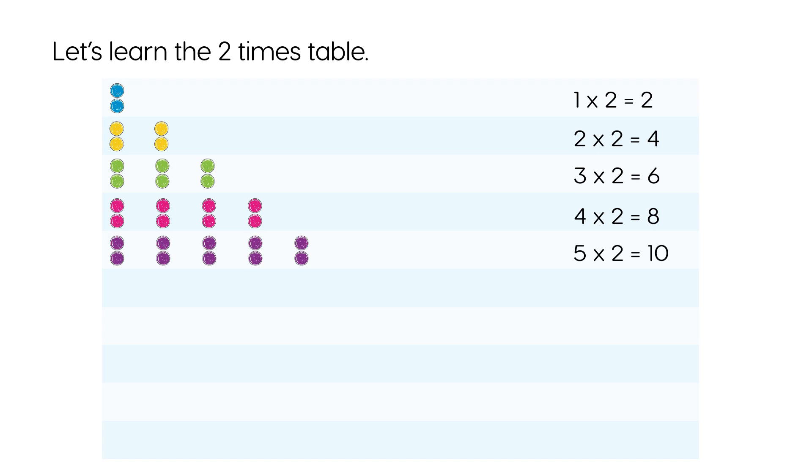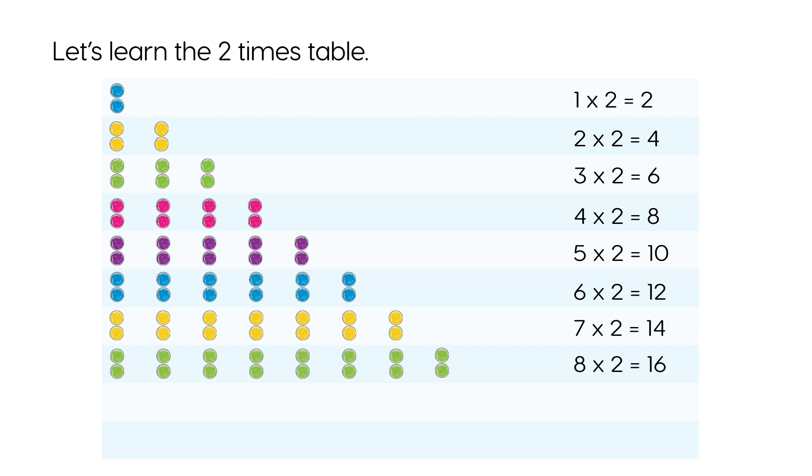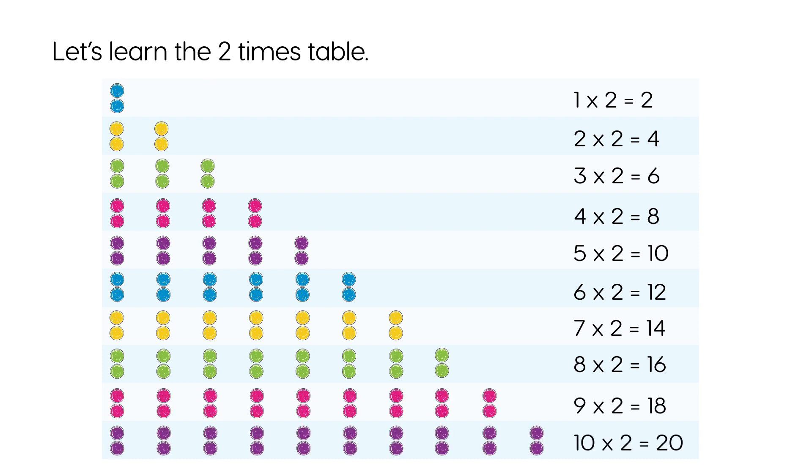Let's learn the 2 times table. 1 times 2 equals 2. 2 times 2 equals 4. 3 times 2 equals 6. 4 times 2 equals 8. 5 times 2 equals 10. 6 times 2 equals 12. 7 times 2 equals 14. 8 times 2 equals 16. 9 times 2 equals 18. 10 times 2 equals 20.